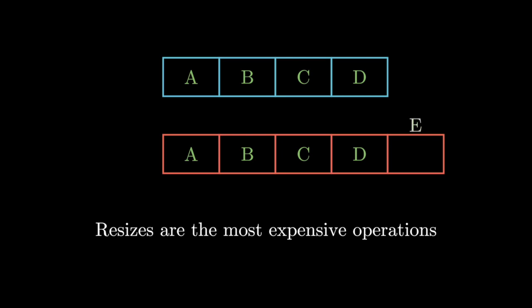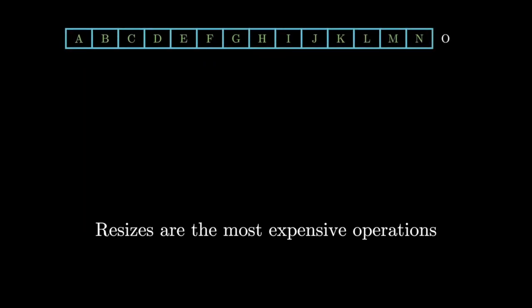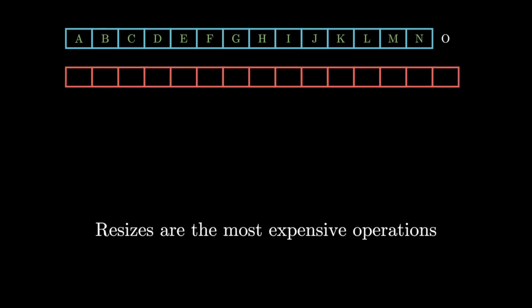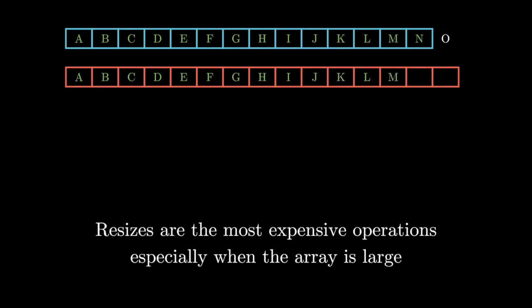Right now, when we resize by adding a constant number of elements, at some point when our dynamic array gets really large and we continually add elements, we're going to be doing a lot of resizes where we're copying over a ton of elements. A better scheme would have to find a reasonable way to limit the number of resizes.